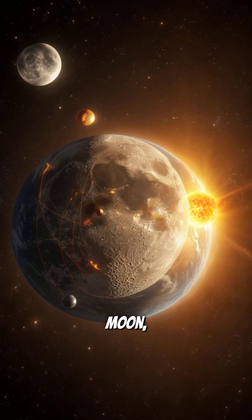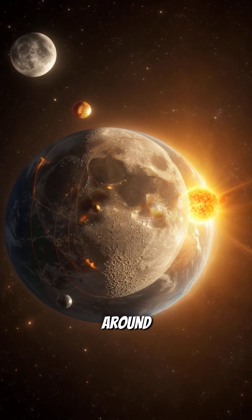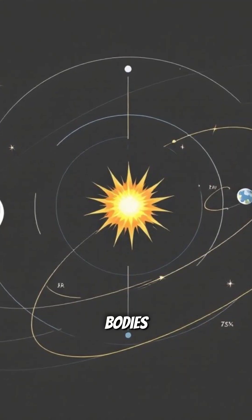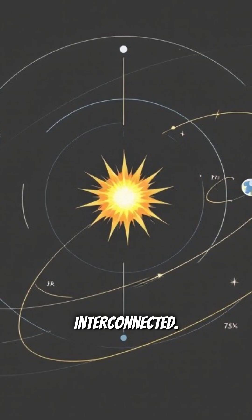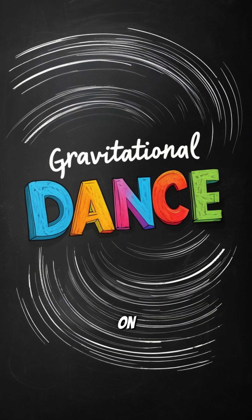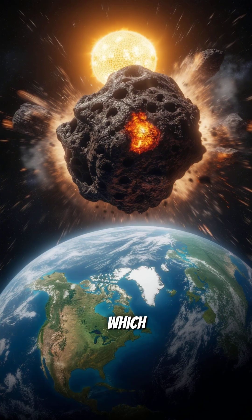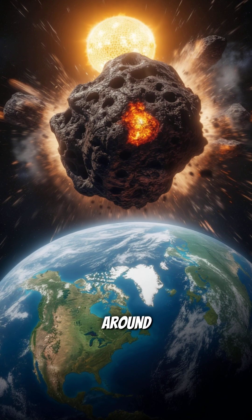The Sun also pulls on the Moon, complicating its orbit around the Earth. These three bodies are constantly pulling on each other and their motions are interconnected. As the Moon moves, its pull on the Earth changes slightly, which can also affect the Earth's orbit around the Sun.